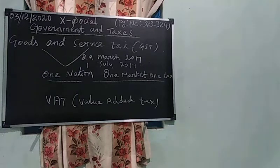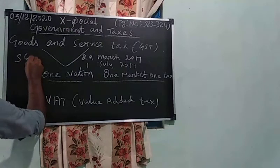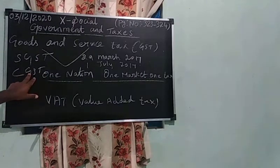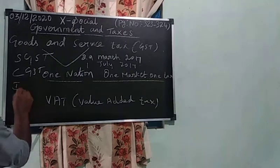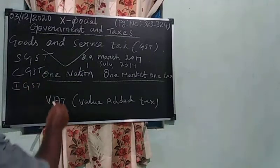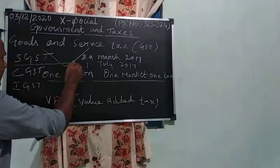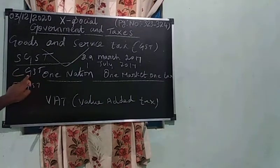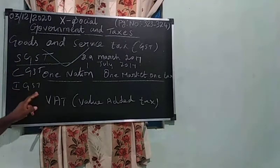There are three components of GST: SGST — State Goods and Service Tax, CGST — Central Goods and Service Tax, and IGST — Integrated Goods and Service Tax. The state government collecting tax is SGST, the central government collecting is CGST, and both states collecting together is IGST.